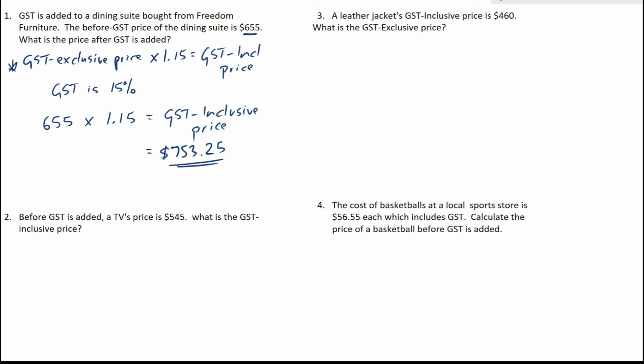Number 2 here is a similar question. Before GST is added, a TV's price is $545. What is the GST inclusive price? Let's write down our formula again: GST exclusive price times 1.15 is equal to the GST inclusive price.